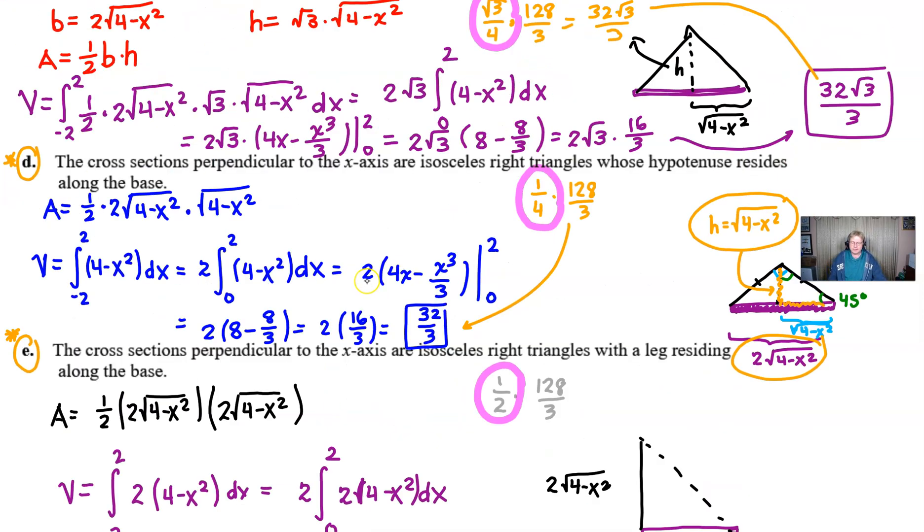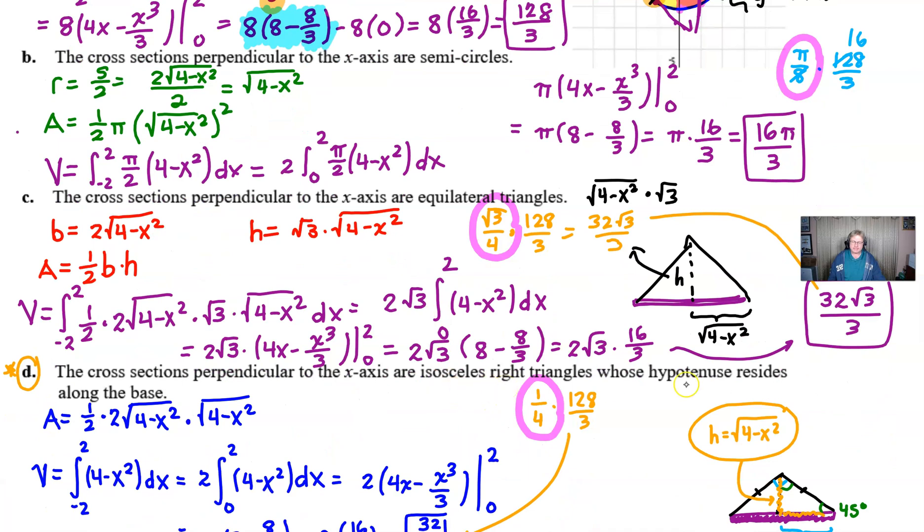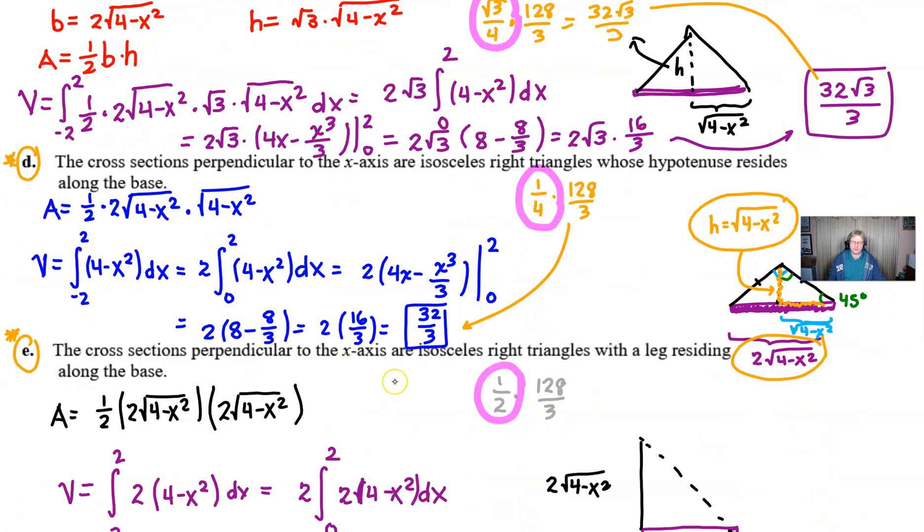So if we look at our shapes, it seems to equate semicircles is pi over eight times the square volume, equilateral, radical three over four, isosceles right, hypotenuse in the base, one over four, isosceles right, with a leg in the base, one over two. What does all that mean? Well, it may mean nothing. In other words, you don't have to memorize those things.